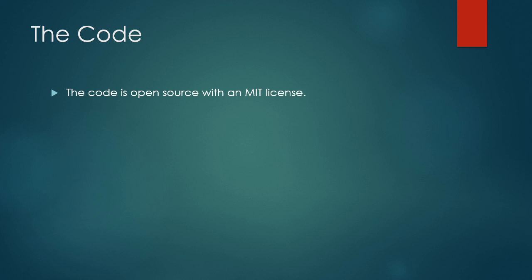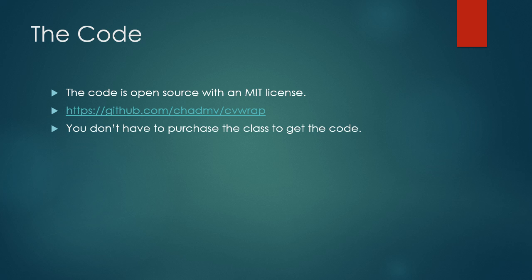If you want to check out the code, it's open source with an MIT license, which means you can basically do whatever you want with it. It's hosted on GitHub — if you're watching this video before the rest of the series is released, you don't have to purchase the class to get the code; you can just go to my GitHub and look around. What these videos add is going over the code step by step and building it up from scratch. Anyway, let's start looking at the rest of the videos and write this wrap deformer.